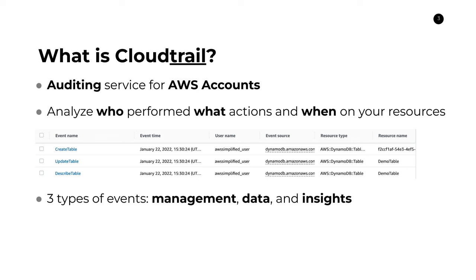And then thirdly, there are insights. Insights are a special type of trail that allow you to leverage AWS's machine learning algorithms to basically detect when anything out of the ordinary is happening in terms of access or usage of your applications. So say, for instance, if you have an application that typically only receives 100 calls per hour, then all of a sudden it's receiving 100,000 calls per hour — that may raise an insight event that you can capture and potentially create an alarm on in CloudWatch.